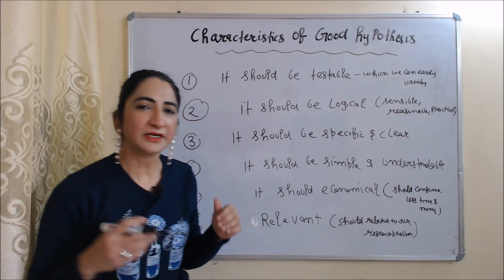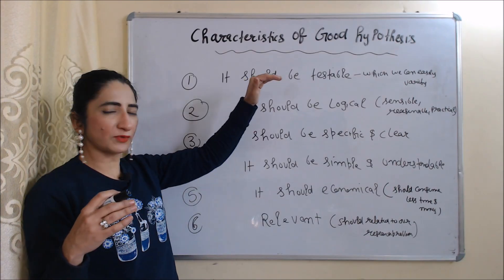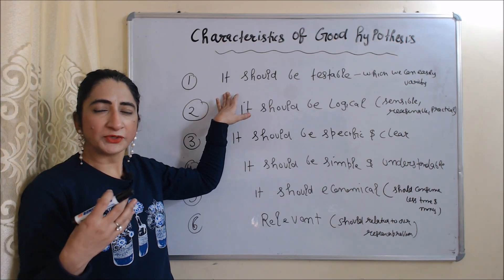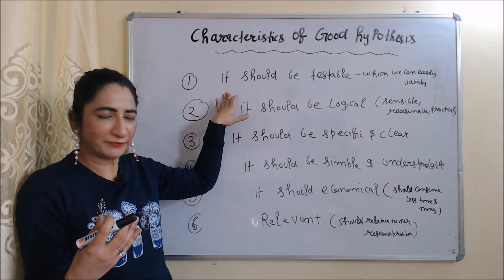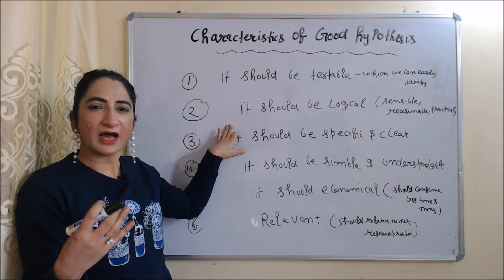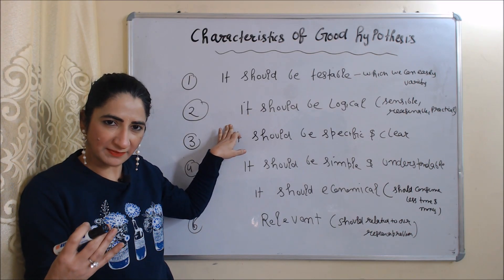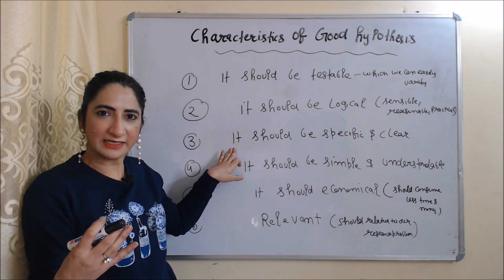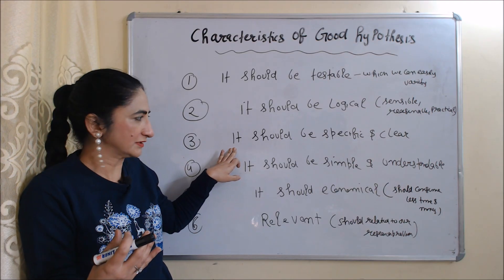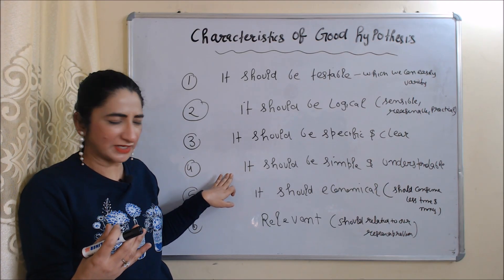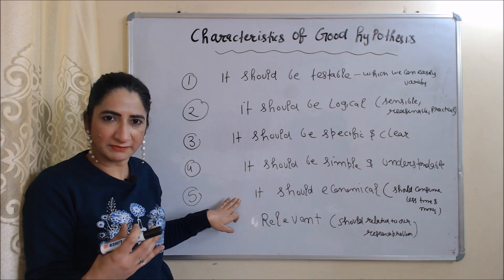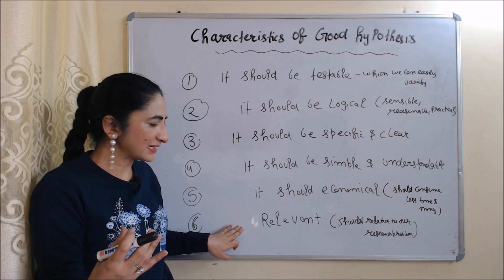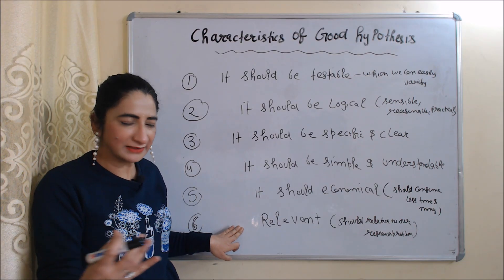Now we will see the characteristics of a good hypothesis. First, it should be testable — we should make a hypothesis which we can easily verify. It should be logical, meaning reasonable, practical, and sensible. It should be specific and clear, meaning we should clearly define our hypothesis. It should be simple and understandable, economical — consuming less time and money — and finally, relevant, meaning it should relate to our research problem.